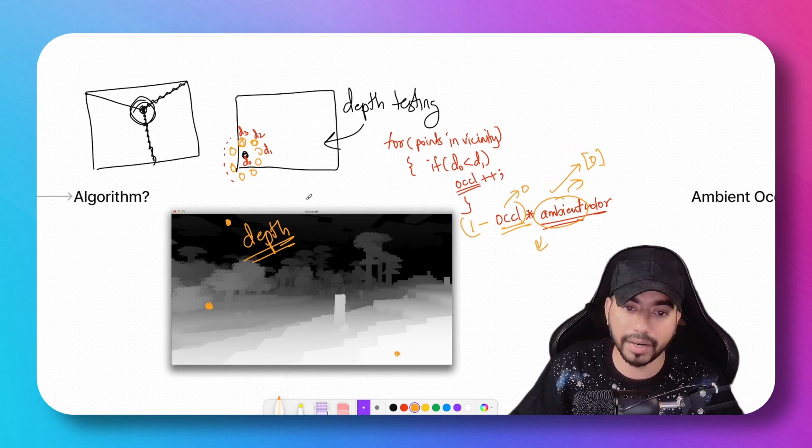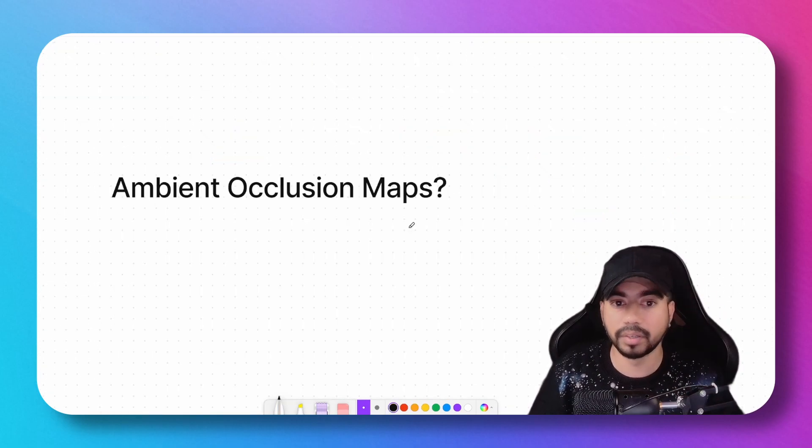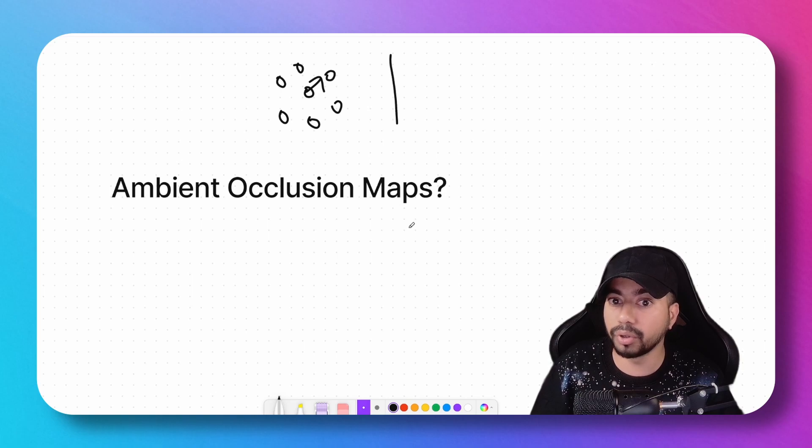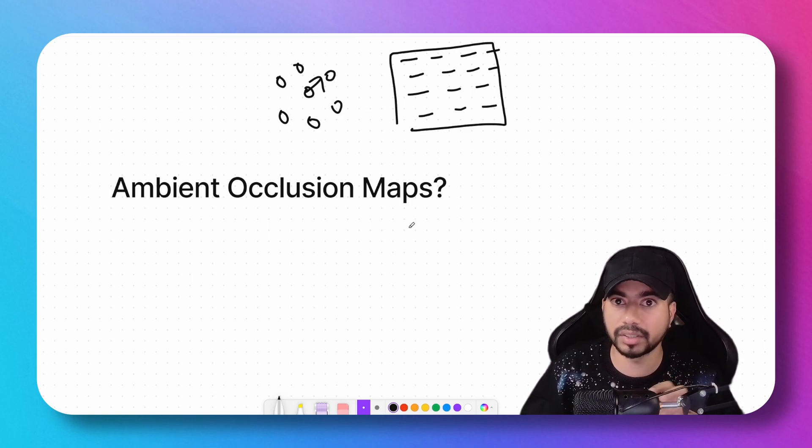In the previous step, we were sampling values from all the surrounding points and then comparing the depth. If you do that for all the pixels, it's a heavy operation. At least for static meshes—meshes that are not going to change—if I have a 3D model, I know all the points of the 3D model.